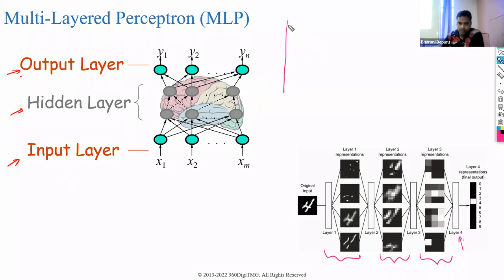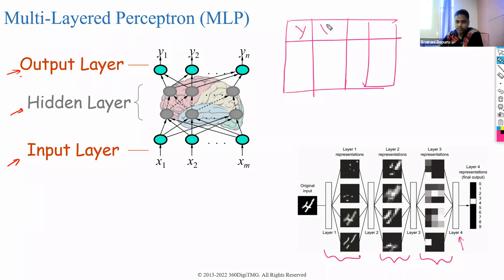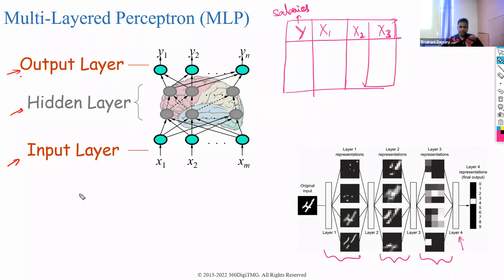If your output variable is a continuous variable — like predicting salaries, electricity consumption, or sales — and you have three inputs, you will have three neurons plus one bias in the input layer. The number of neurons in the input layer is fixed and won't change.